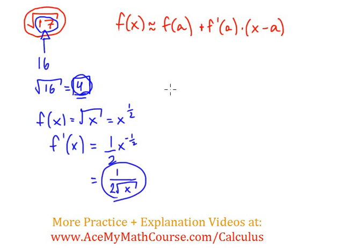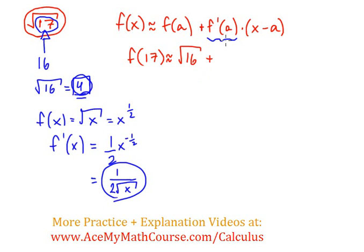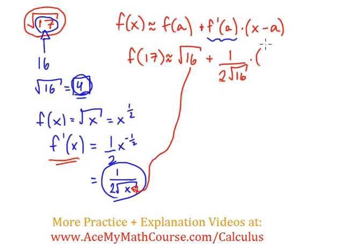And we'll need that derivative for this next portion. So, f of 17 is going to be approximately f of a — that's the square root of 16, since a is 16 — plus f prime of a, which is 1 over 2 times the square root of 16. I'm plugging 16 in as well, since that's f prime evaluated at a. Times x minus a: our x is 17, minus a which is 16.